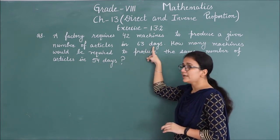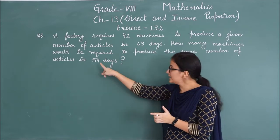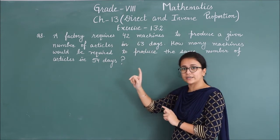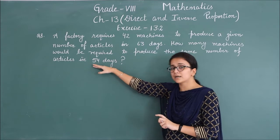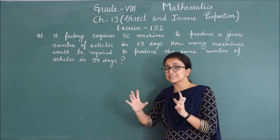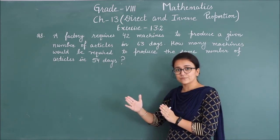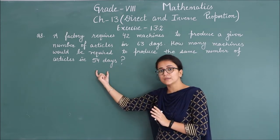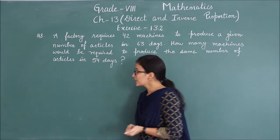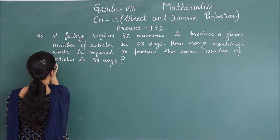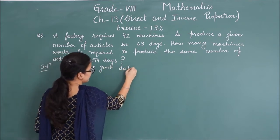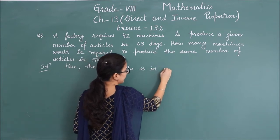Now, the number of days is going from 63 to 54 — days are less. In 54 days, all articles should be created, so obviously more machines will be needed because we have to cover the same work in fewer days. The number of articles is the same, so this is an inverse proportion. Here, the given data is in inverse proportion.